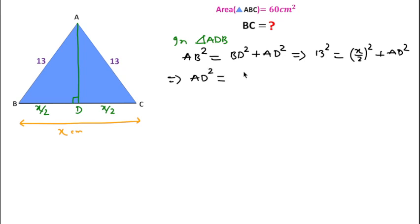We can write AD square equals 169 minus x square over 4. Let's suppose this is equation 1.